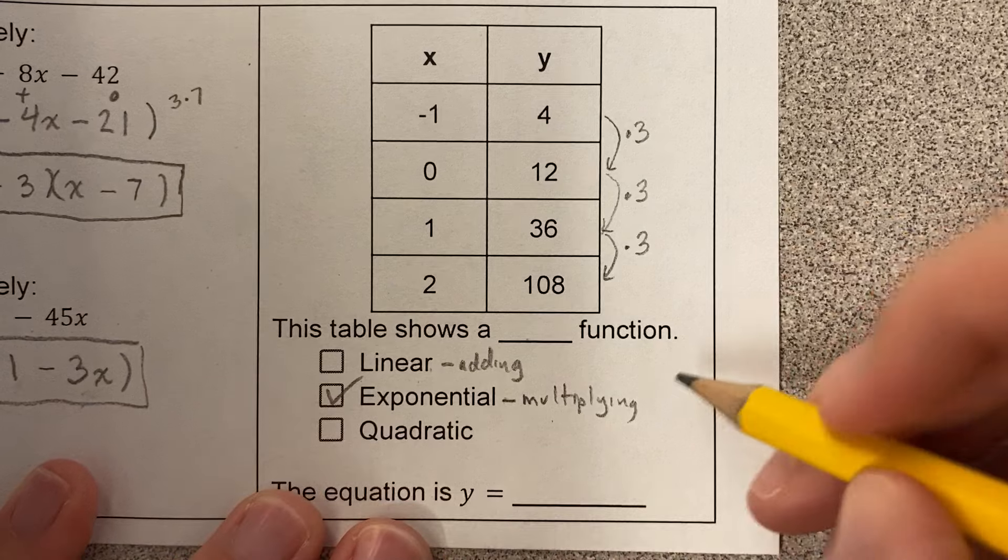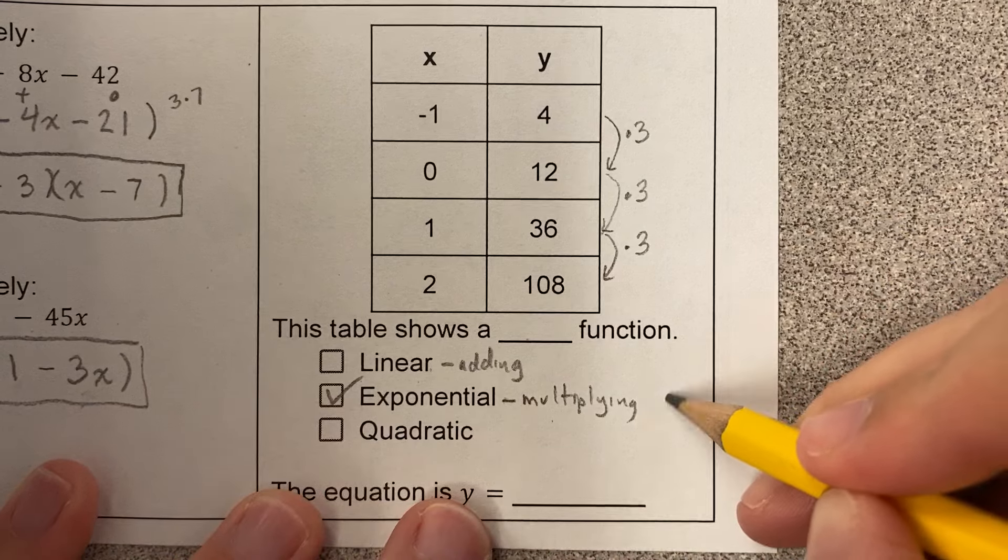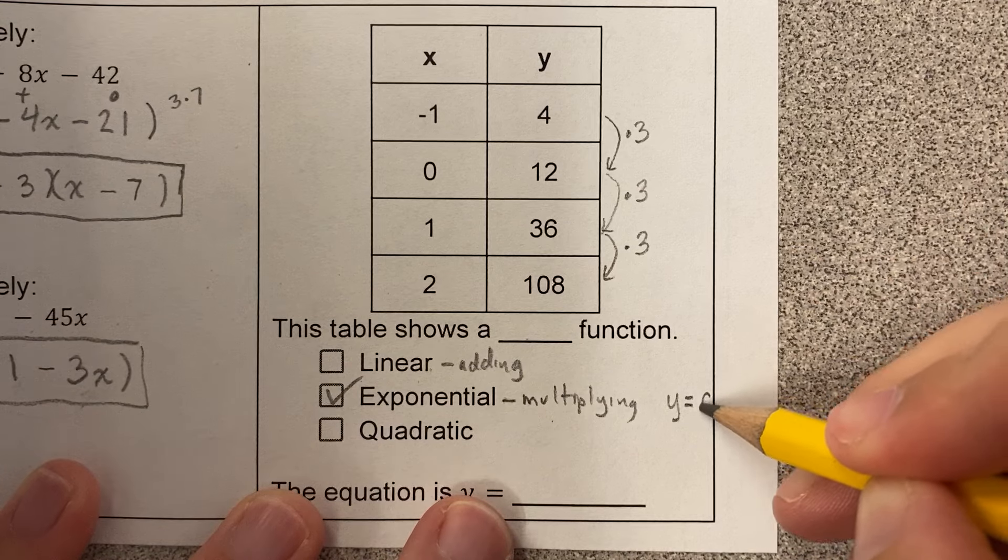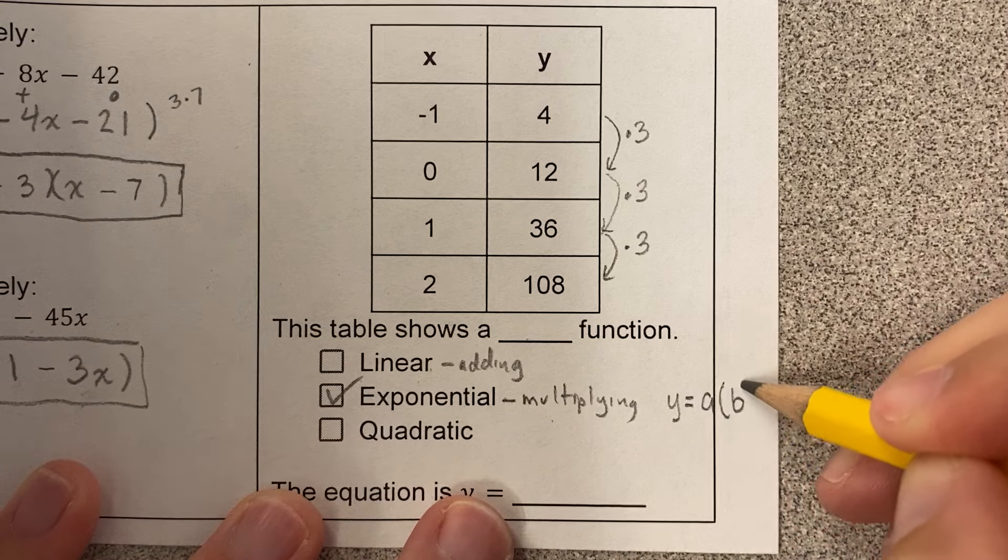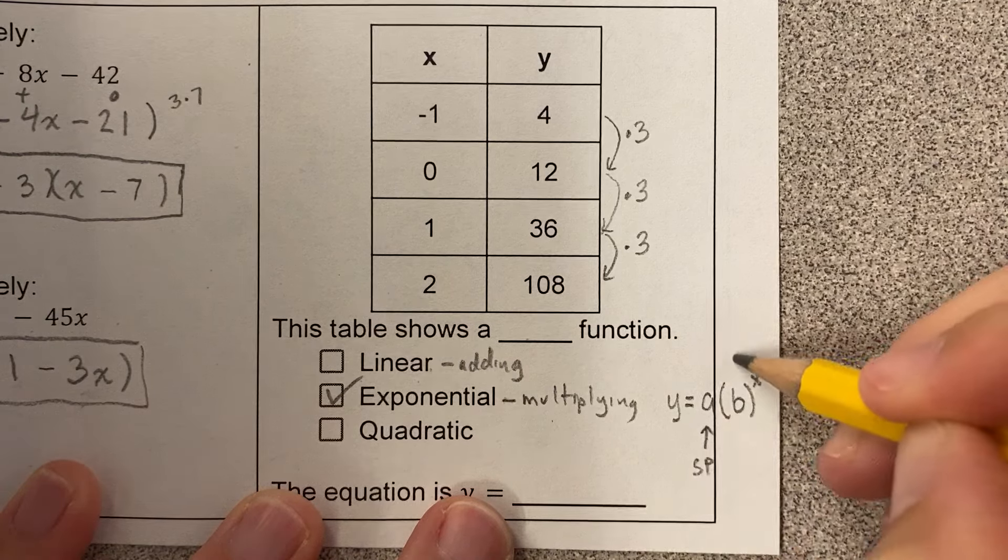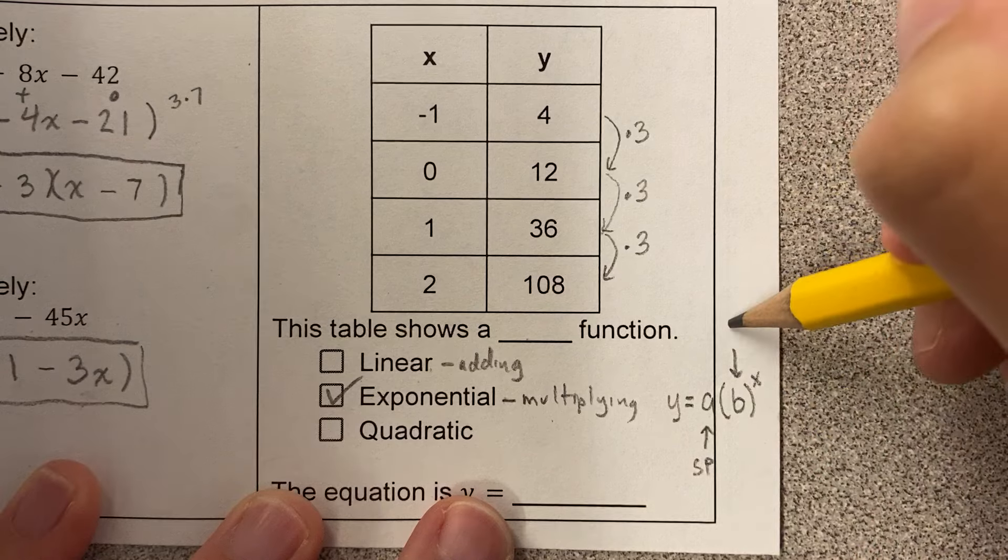Now the equation for multiplying, the pattern for exponential. The pattern is always like this. It's the starting point times the rate of change to the power of x. This is the starting point. And this is called the growth factor.